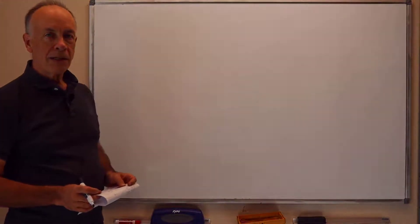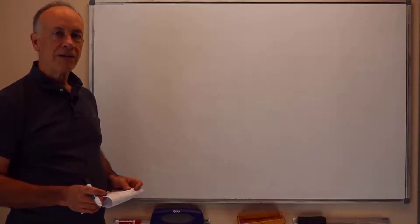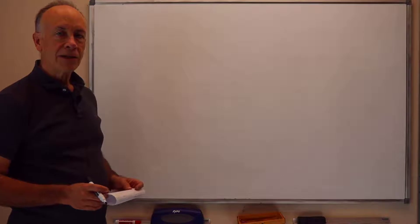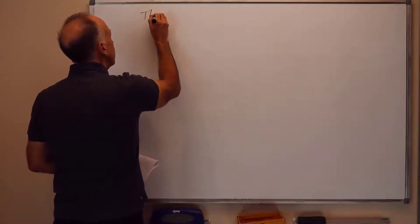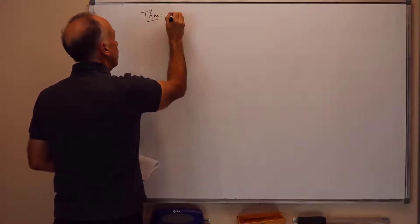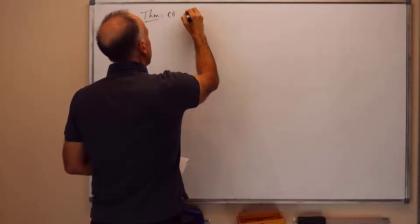An important but simple property is that affine combinations are preserved under affine transformations. Linear combinations are preserved under linear transformations. So let me state this as a theorem here. Theorem 1, part 1, is linear combinations.